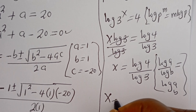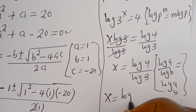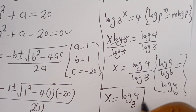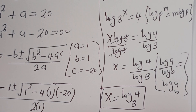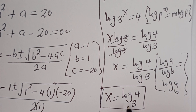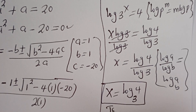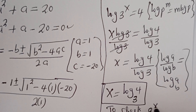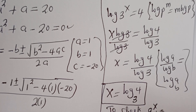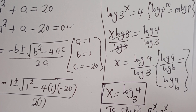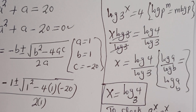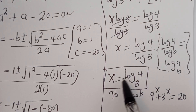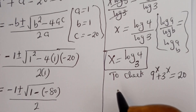Using the change of base rule — log a over log b equals log a base b — this can be written as x is equal to log 4 base 3, and this is the final answer. Let's check to confirm if this answer is right. We have the given equation: 9 to the power of x plus 3 to the power of x is equal to 20. When x is log 4 base 3, we have 9 to the power of log 4 base 3 plus 3 to the power of log 4 base 3.